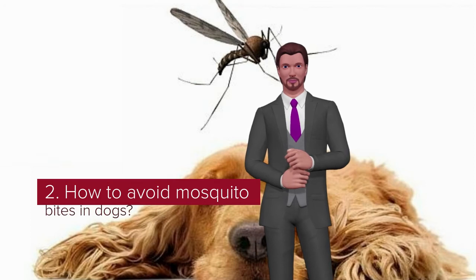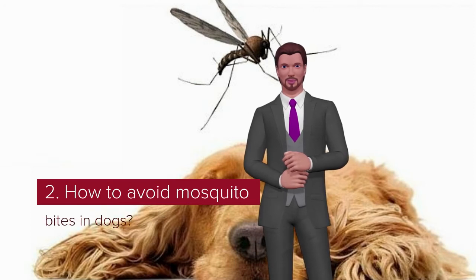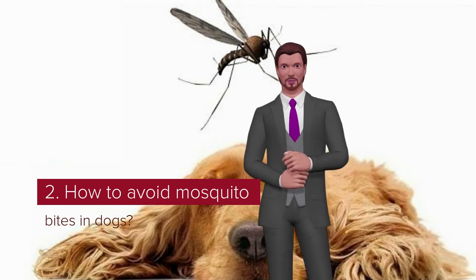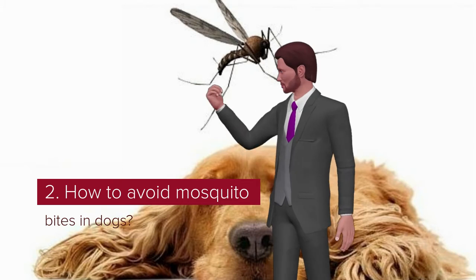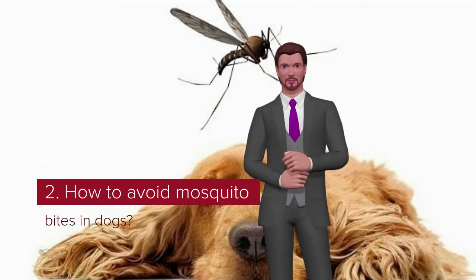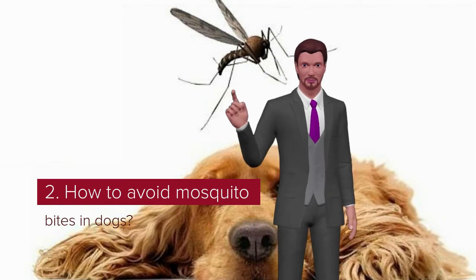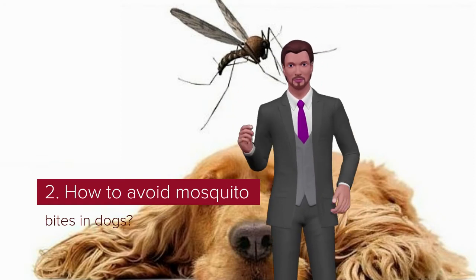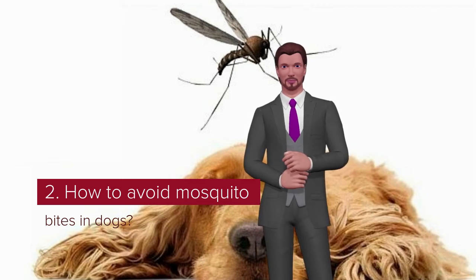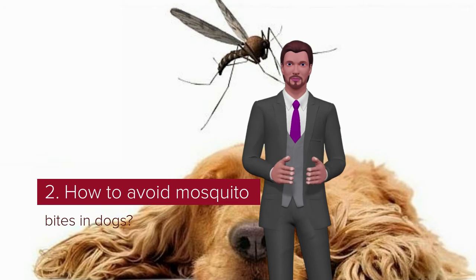How to avoid mosquito bites in dogs? The most effective way to prevent mosquito bites, and therefore the diseases they can cause in dogs, is through proper preventive medicine. Regular deworming of the dog with specific products is the safest method. In the market we can find different formats, which include pills, pipettes, collars, and aerosols. We recommend always consulting with a veterinarian to choose the most suitable product according to the parasites present in our country or the clinical history of the dog.